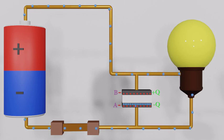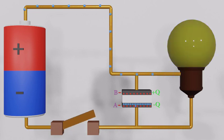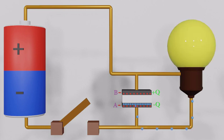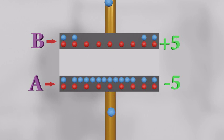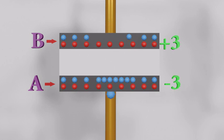Let's open the switch and disconnect the battery. Even though the battery is disconnected, the capacitor still has the potential to move electrons around the circuit. Plate A releases its excess electrons and plate B attracts electrons at the same time, until the electromagnetic force between plate A and B goes to zero. We call this capacitor discharging.